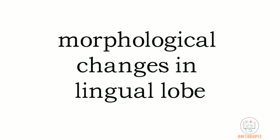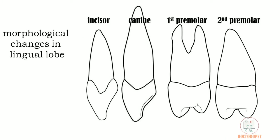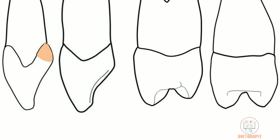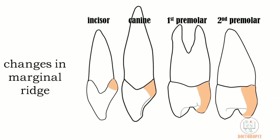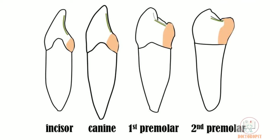Looking at morphological changes from incisors to premolars, there is a gradual increase in development of the lingual lobe — from a small cingulum in incisors, to a larger cingulum in canines, to a lingual cusp smaller than the buccal cusp in the first premolar, to a lingual cusp equal to the buccal cusp in the second premolar. Due to these changes, the marginal ridge in anteriors which is oblique and studied from the lingual aspect becomes horizontal in posteriors and is studied from the occlusal aspect. A similar transition is seen in mandibular teeth.